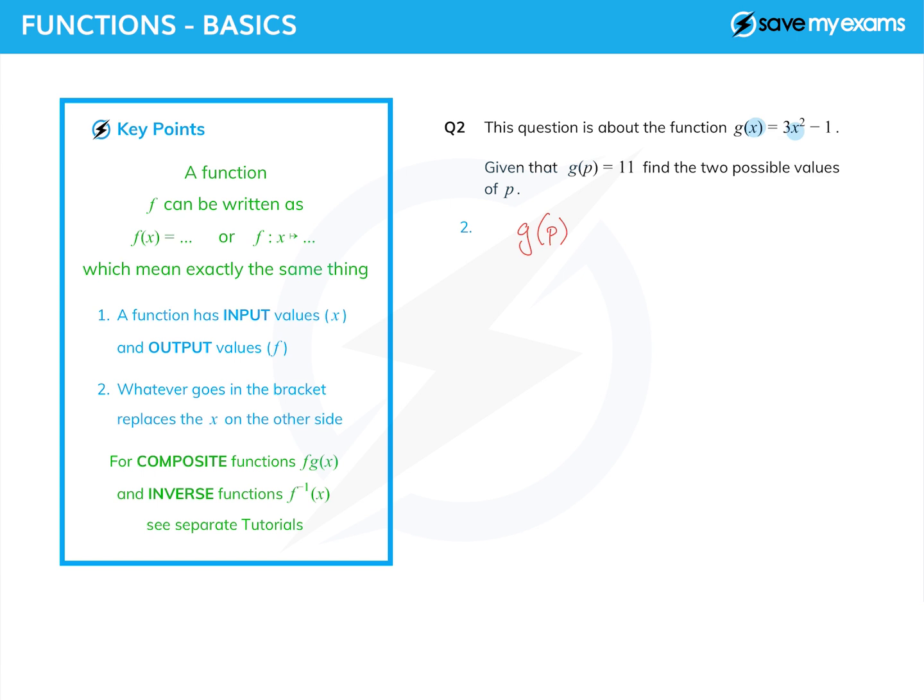So I've got a p and that's equal to 3p² - 1. Again, I've just replaced the x by p on both sides, and I'm told that g(p) is equal to 11. And so I have here an equation to solve, and that's going to allow me to find the values of p.